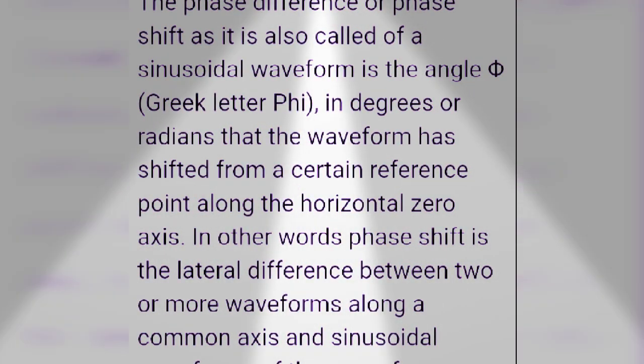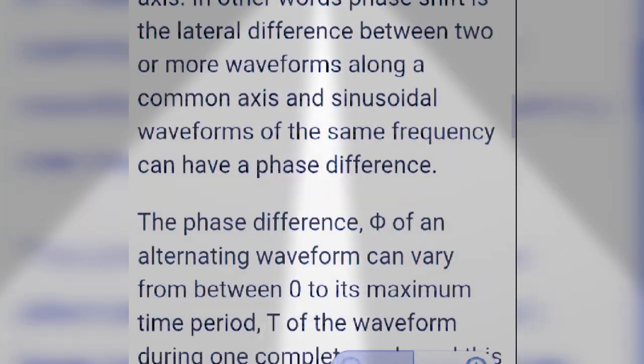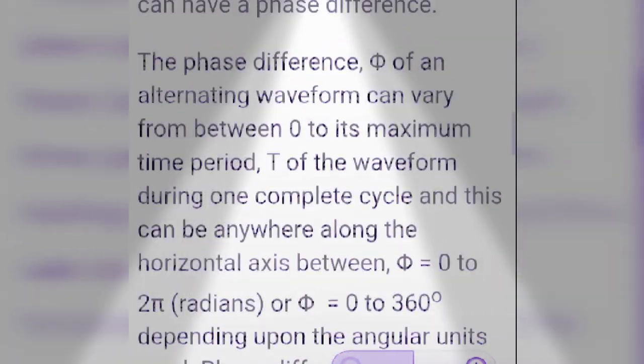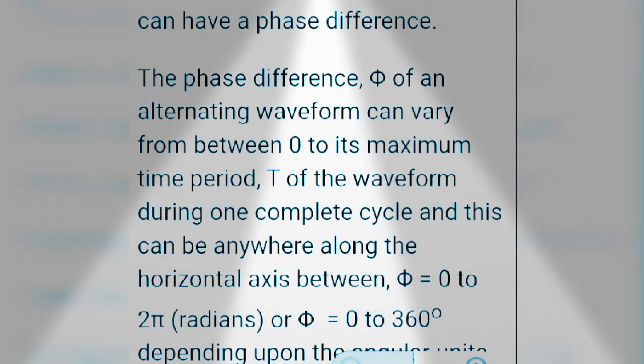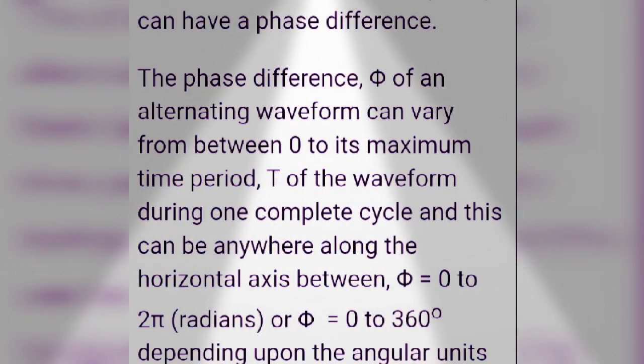In other words, the phase shift is the lateral difference between two or more waveforms along a common axis. Sinusoidal waveforms of the same frequency can have a phase difference. The phase difference φ or θ of an alternating waveform can vary from zero to the maximum time period T.